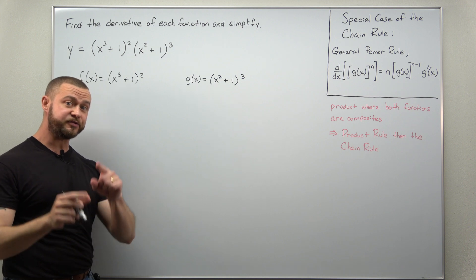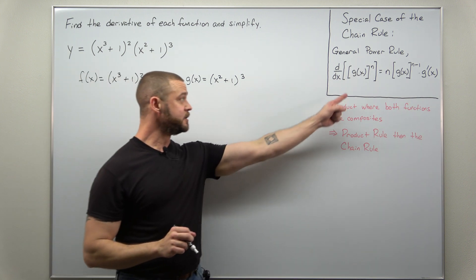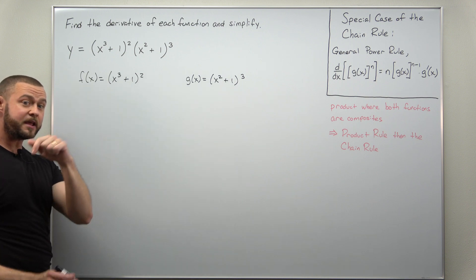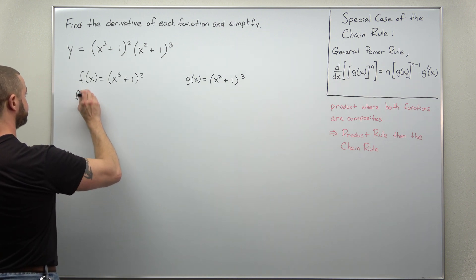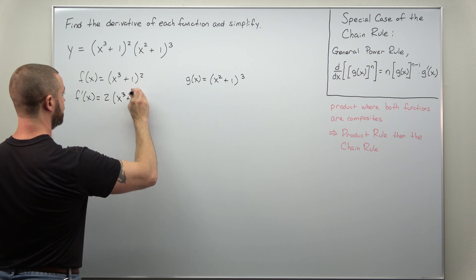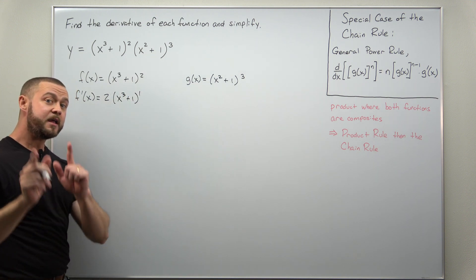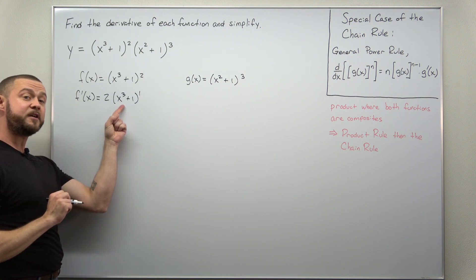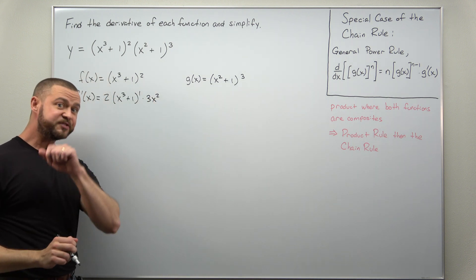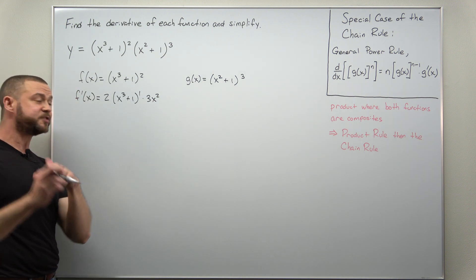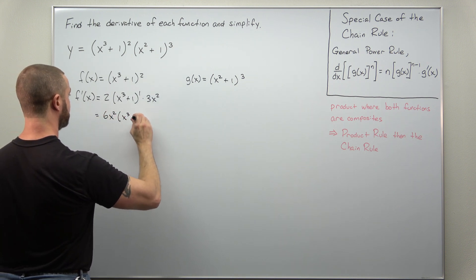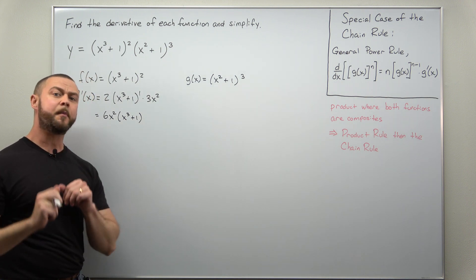To calculate the individual derivatives f' and g', we're going to use the general power rule. For f', we bring the power 2 down, keep the inside the same, subtract 1 from the power, and multiply by the derivative of the inner function, which is 3x². We can simplify and rearrange those factors to write this as 6x² times (x³ + 1), leaving it factored.